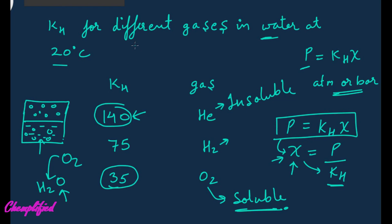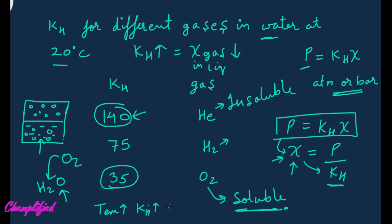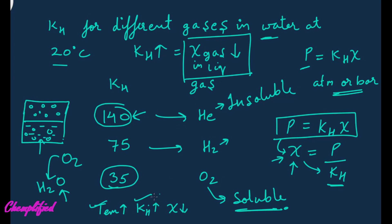So finally: if the value of KH increases, the mole fraction of gas in liquid will decrease. Also, as temperature increases, the value of KH increases, and therefore mole fraction decreases. In both cases, whether temperature increases or KH increases, the mole fraction of the gas in liquid will decrease. If KH is high, partial pressure will be less, and so mole fraction will also be less, because Henry's Law states that partial pressure is directly proportional to mole fraction.